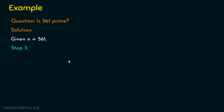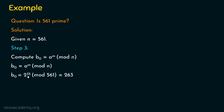Moving to step three, we compute b0 equals a to the power m mod n. Substituting: b0 equals 2 to the power 35 mod 561. This is modular exponentiation — I recommend watching the previous lecture on modular exponentiation to solve these equations easily. After evaluating, we get b0 equals 263.